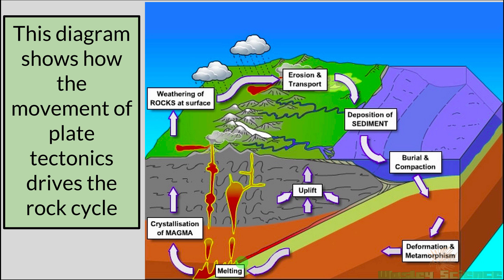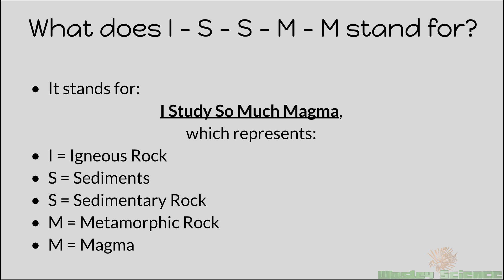The rock cycle can go in many interesting and different directions depending on the path. If you're struggling to remember these things, think of the acronym 'I Study So Much Magma.' The I represents igneous rocks, the first S represents sediments, the second S represents the sedimentary rock, then you have the metamorphic rock, and last you have magma — which takes you back to igneous. That gives you a full loop of the rock cycle, touching upon everything.